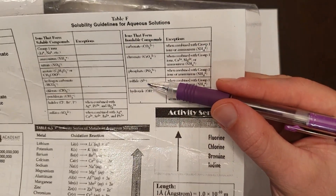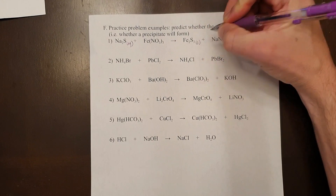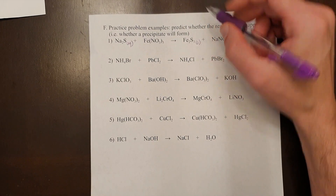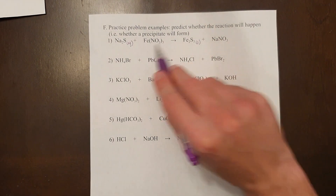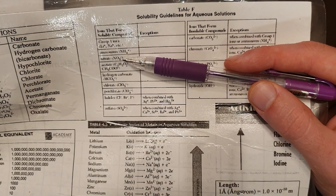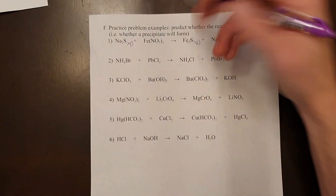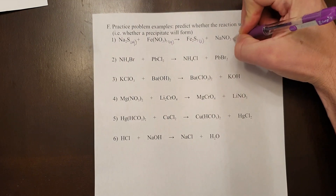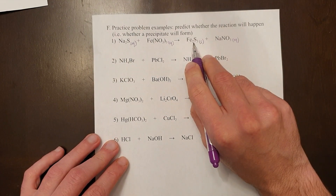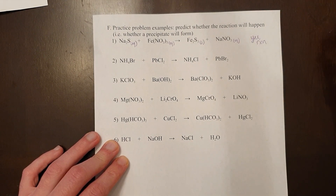The other sulfide on the product side is iron sulfide. Sulfides are generally not soluble, and iron is not one of the exceptions, so we mark it as solid. The other two products are iron nitrate and sodium nitrate. Looking up nitrate on the table, nitrate is always soluble in water with no exceptions at all — so nitrates are always aqueous. Since we have something that is solid, we say yes, the reaction will occur.